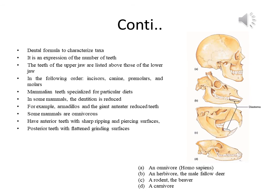For example, when you divide your upper jaw in half, one side is the mirror image of the other, with the upper side showing the upper part of the dental formula and the lower jaw showing the lower part. Mammalian teeth may be specialized for particular diets; in some mammals the dentition is reduced, sometimes to the point of having no teeth — for example, armadillos and the giant anteater, which feed on termites and ants and have no need for chewing.